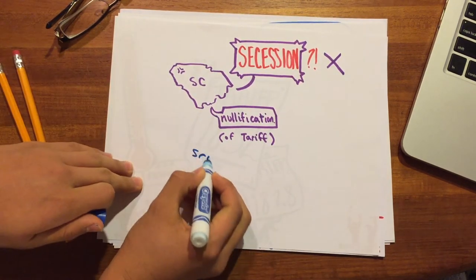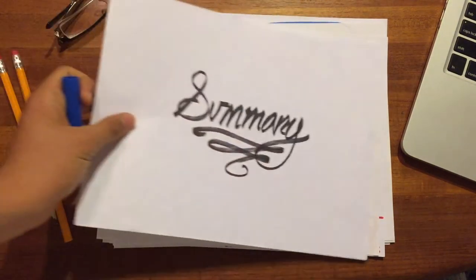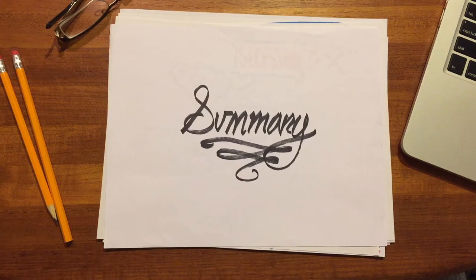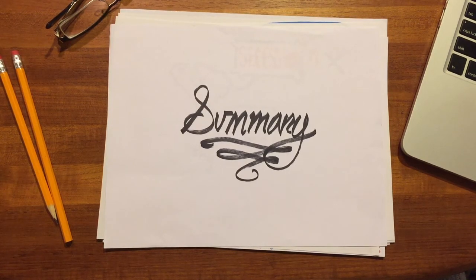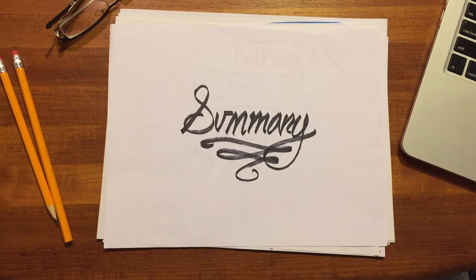In this video, we covered the Webster and Hayne debate between the New England and southern states over the issue of the distribution of land and tariffs. Daniel Webster, from Massachusetts, argued that the Union was comprised of the people and should all follow the laws of the federal government. Robert Hayne, from South Carolina, on the other hand, argued that the states had the right to determine if laws were constitutional.